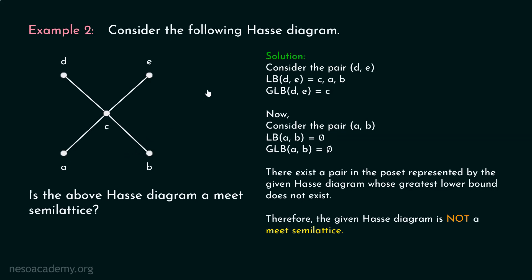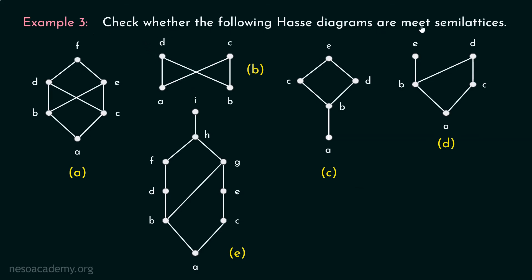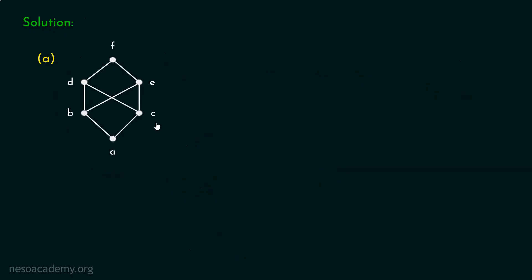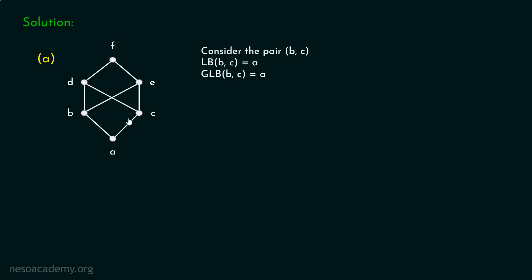Let's consider one more example. Check whether the following Hasse diagrams are Meet Semilattices or not. Let's consider them one by one. First, we will consider this figure. Consider the pair b and c. Lower bound of b and c is obviously a, and greatest lower bound of b and c is a — because there is just one lower bound.